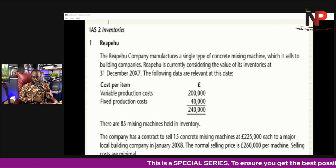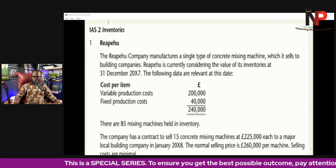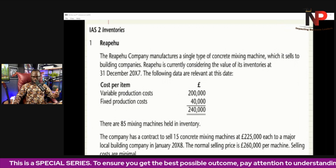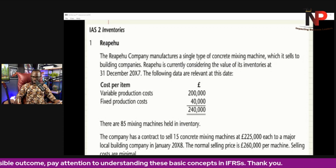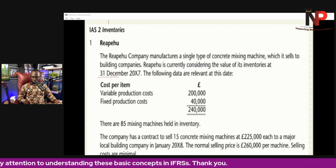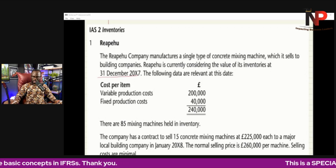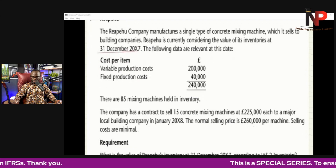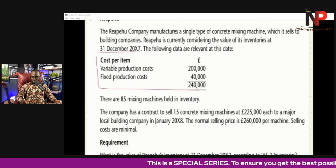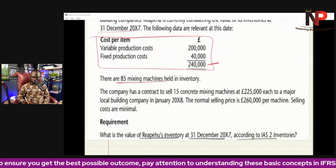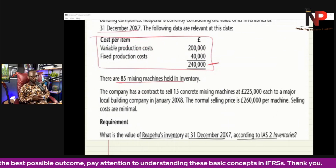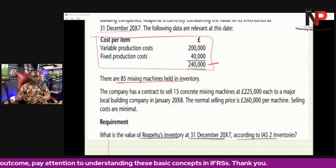The Repair Who company manufactures a single type of concrete mixing machine which it sells to building companies. Repair Who is currently considering the value of its inventories at 31st December 20X7. The following data are relevant at this date. The cost of inventory is $240,000. There are 85 mixing machines held in inventory, so in total we have 85.